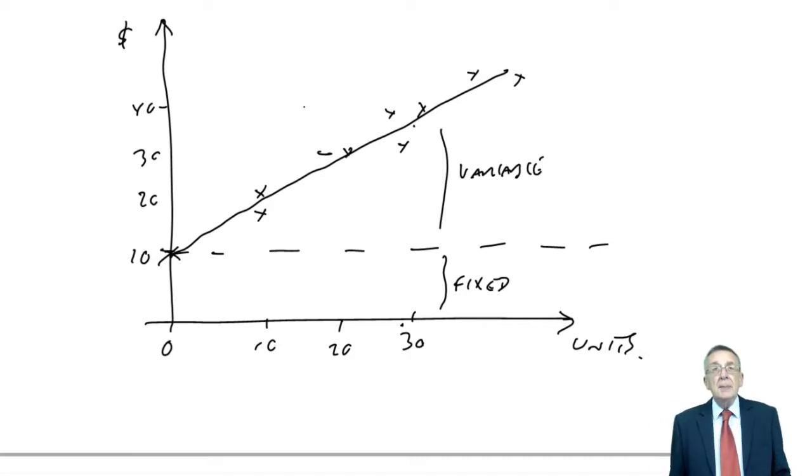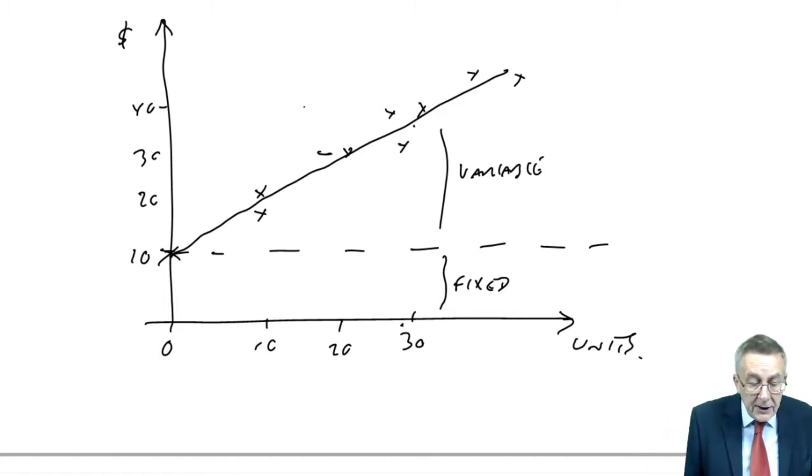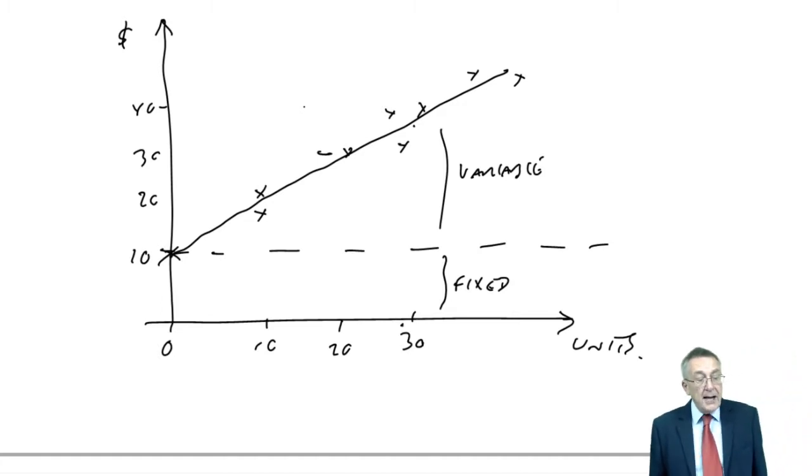And so this is where high-low comes in. Suppose, turn to page, the third page, where you see an exercise.